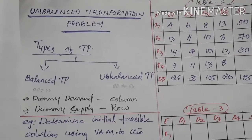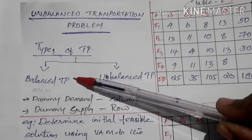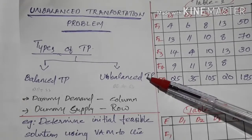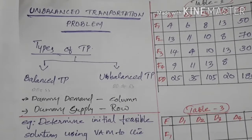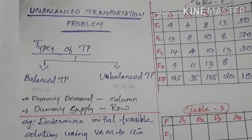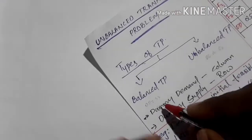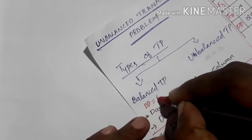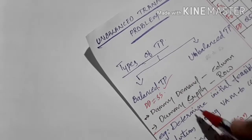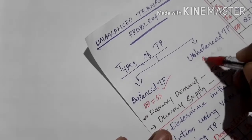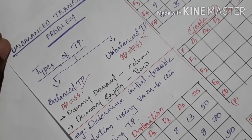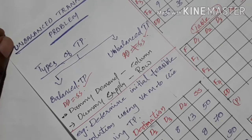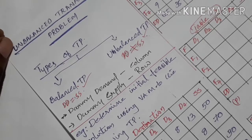Mainly there are two types of transportation problem: balanced transportation problem and unbalanced transportation problem. In a balanced transportation problem, total demand and total supply are equal. When demand is equal to supply, it is known as a balanced transportation table. If demand is not equal to supply, then it is known as an unbalanced transportation problem.